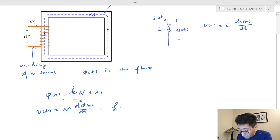If you substitute phi into this, you will get that's going to be equal to k and N squared d(i(t))/dt, because k is a constant and k is a positive constant number.